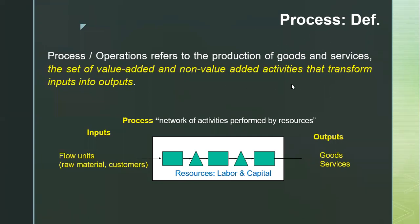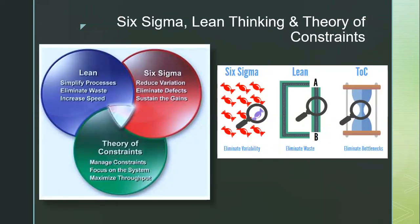For process improvement, we have three programs: Six Sigma, Lean Thinking, and Theory of Constraints. All three ultimately aim to satisfy the customer. Six Sigma mainly focuses on reducing variation — identifying defects in the product, eliminating those defects from the process, and minimizing variation so we get a better quality product.